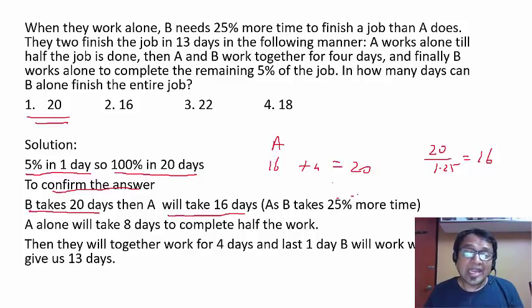A alone will then take 8 days to complete half the work. Remember half the work is completed by A first. And then they will work together for 4 days, so 12 days. And last one day B will work, 13 days is what I want. So we get 13 days. So 13 days is what is there. We get the answer.